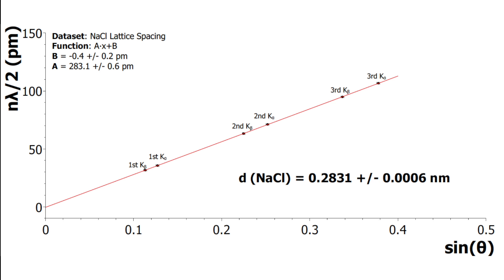This plot shows lambda over 2 versus sine theta for sodium chloride. The theta used here are measured values, and the wavelength used are established values. Assign a 0.1 degree uncertainty for all measured angles. The fitted lattice spacing is 0.2831 plus minus 0.0006 nm.